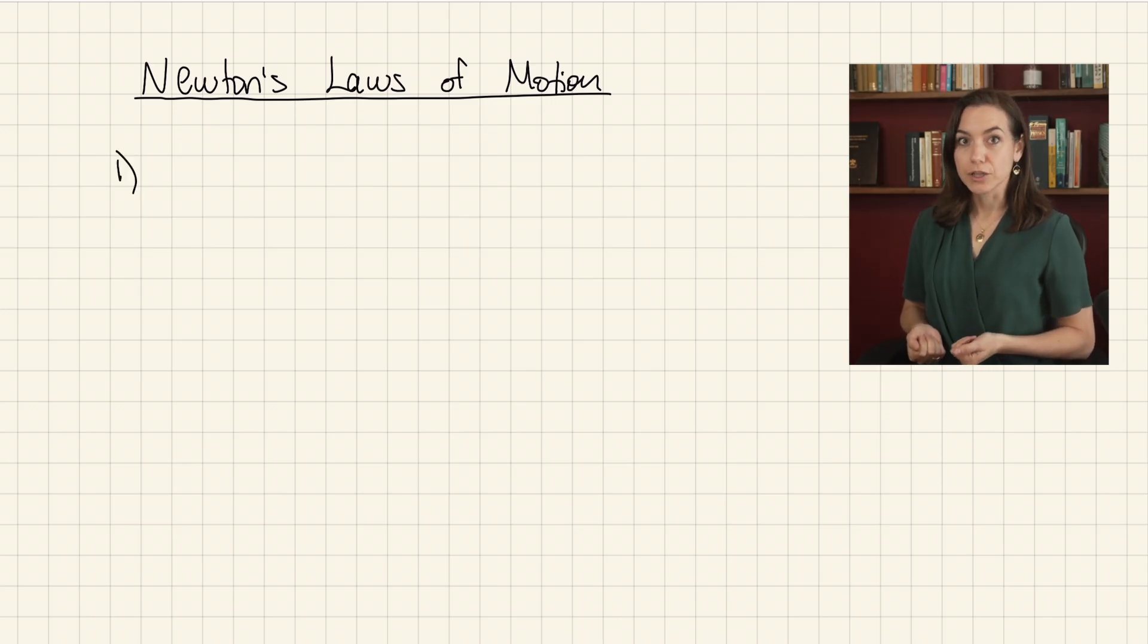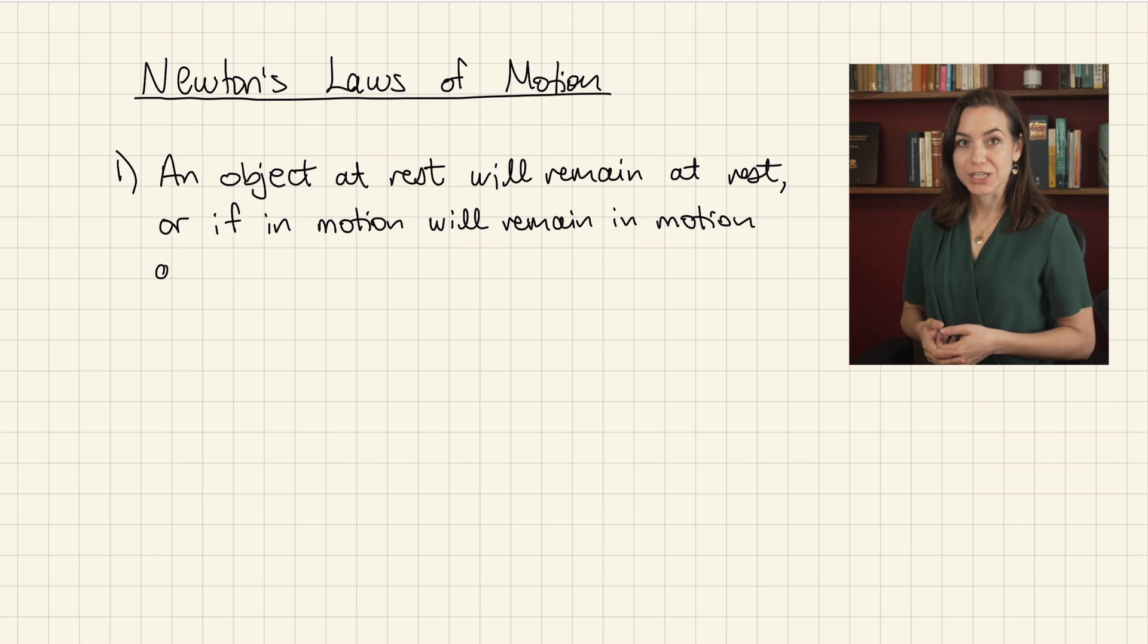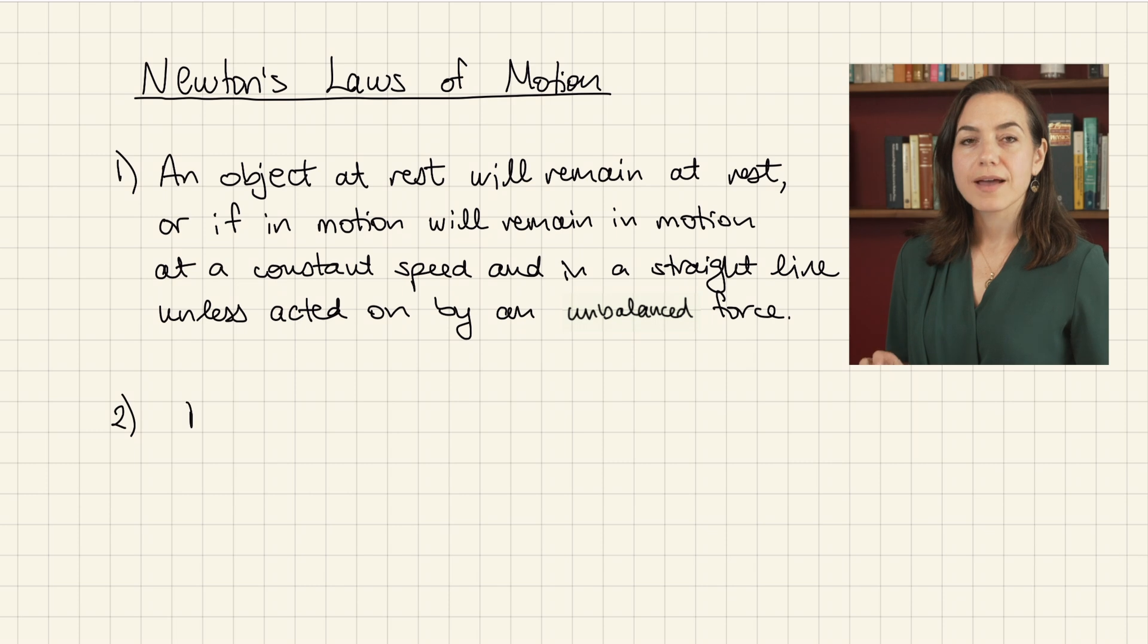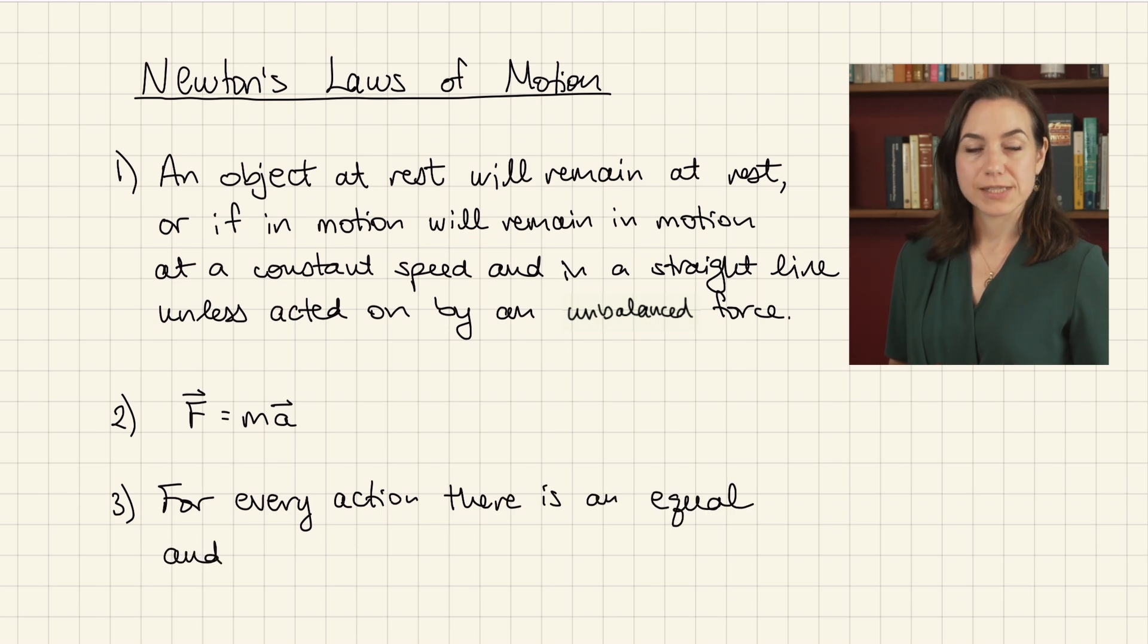They're most commonly stated as follows. Law 1, the law of inertia. An object at rest will remain at rest, or if in motion, will remain in motion at a constant speed and in a straight line unless acted on by an unbalanced force. Law 2, F equals mA. And law 3, for every action, there is an equal and opposite reaction.